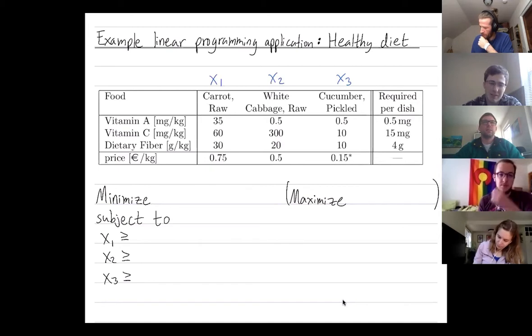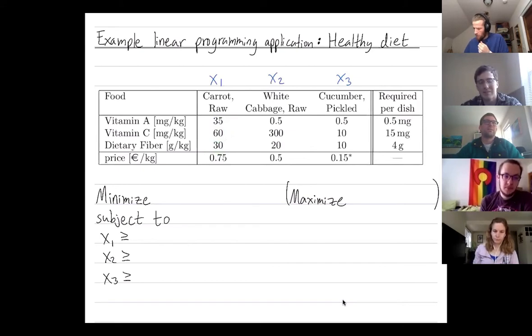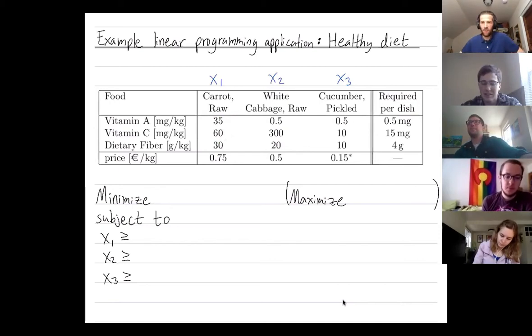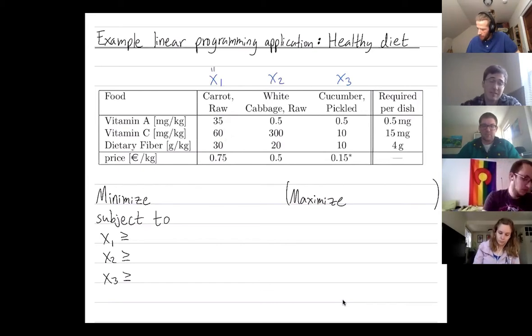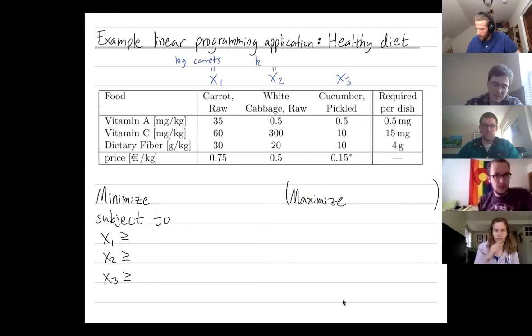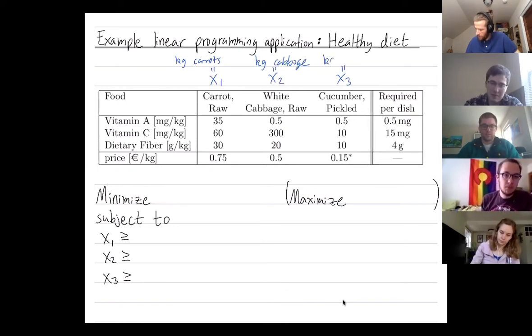Here we've listed how much vitamin A carrots have. So 35 milligrams per kilogram and this is how much vitamin C and how much fiber they have. So what is our optimization problem? We're trying to minimize the cost. So let's first choose our variables. X1 is going to be the kilograms of carrots. X2 is going to be the kilograms of cabbage. And X3 is going to be the kilograms of cucumber.